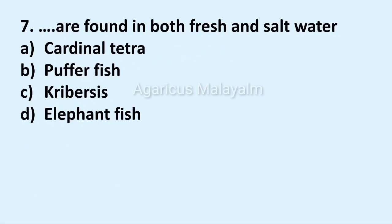Seventh question: Dash are found in both fresh and salt water. Answer options: Option A Cardinal Tetra, Option B Puffer Fish, Option C Cribbersis, Option D Elephant Fish. Correct answer: Option B Puffer Fish.